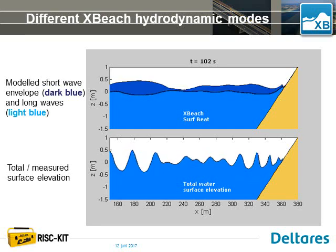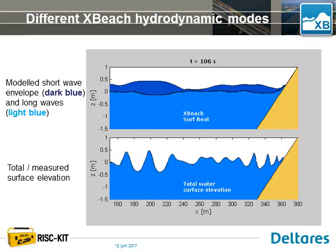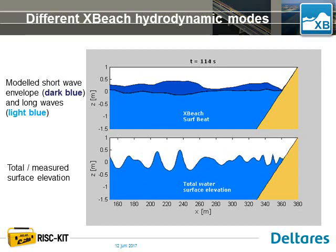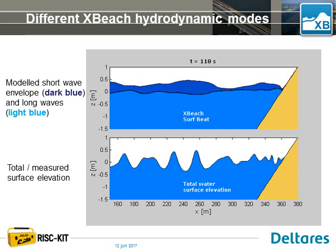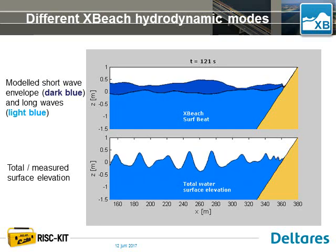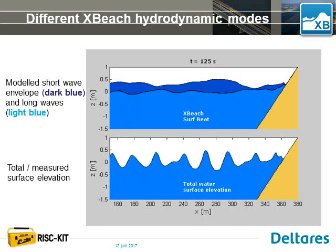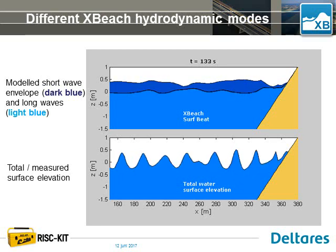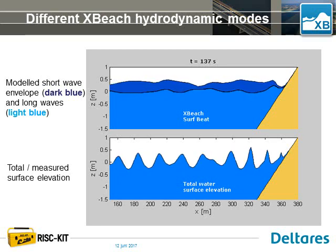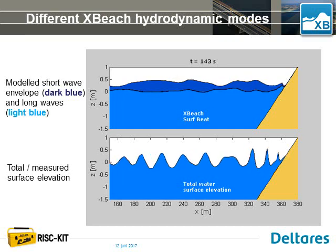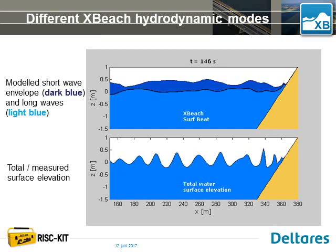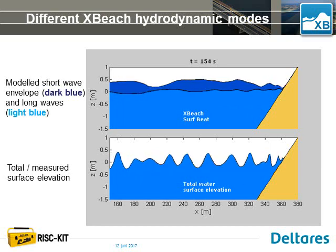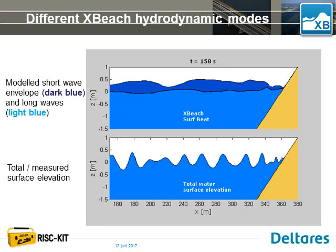To make that clearer, there's an animation here. In the bottom panel you see the total surface elevation as you would measure on the beach. In the top panel is what the XBeach model is solving: a slowly varying water level which includes infragravity waves in the light blue line, and the dark blue line describes the amplitude variation of the short waves.